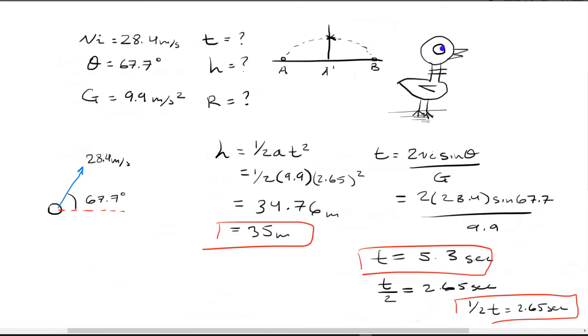And finally, before we solve for the range, we're almost there, home stretch, we have to find the velocity in the X, because that's the missing value for the range equation. So the velocity in the X is very simple. It's the initial velocity times the cosine of theta. And in this case, it'll be 28.4 times cosine of 67.7, which equals 10.8 meters per second.